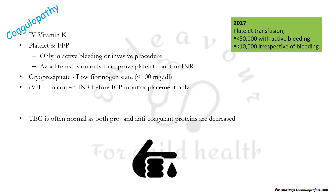Thromboelastography — a graphical demonstration of each step of the coagulation cascade — is often normal in patients with ALF because both procoagulant and anticoagulant proteins are decreased. However, the risk of bleeding and thrombosis still exists in ALF, essentially dependent on the balance between anticoagulant and procoagulant proteins, so thromboelastography might not be that reliable.